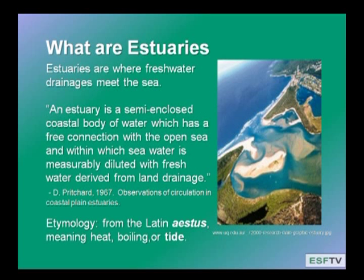Many major cities in the world are built on the edges of estuaries, such as New York and London. If you think about many of the major world cities and their location, you'll realize they're coastal cities at a place where a river is entering the sea. And so estuaries are really important today in terms of human interactions with the marine system as well.